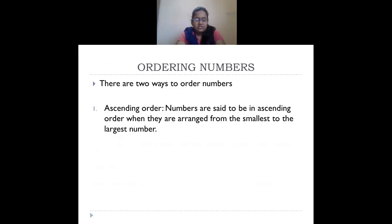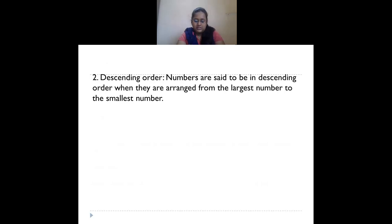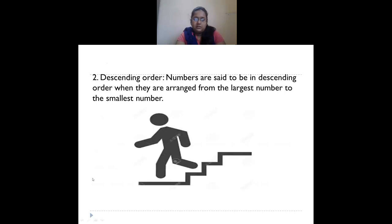Ordering numbers means arranging numbers in a particular way. There are two ways: ascending order and descending order. Ascending order is when you arrange numbers from the smallest to the largest — like climbing up stairs, moving from a smaller level to a greater level. Descending order is when you arrange numbers from the greatest to the smallest — like climbing down stairs, moving from a greater level to a smaller level.